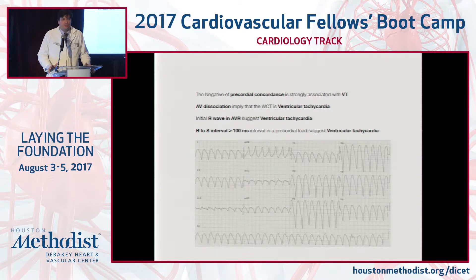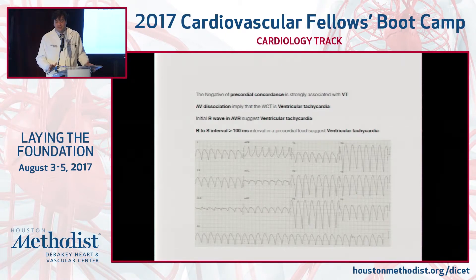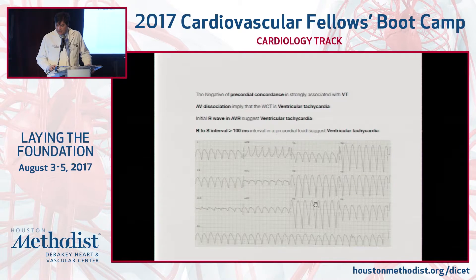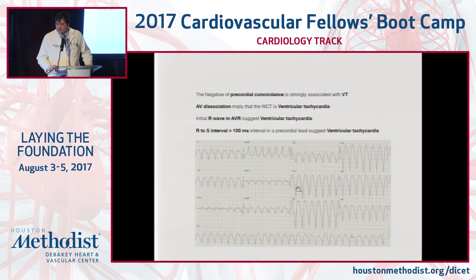We have to rely on other measurements. Negative precordial concordance is strongly suggestive of ventricular tachycardia rather than positive concordance, because the energy goes from the apex to the base, giving that negative concordance. Positive concordance means energy goes from base to apex — that could be SVT or VT. We also talk about AV dissociation — if you see P waves marching out independently. Initial R-wave positive in AVR: as you can see here, a very tall positive AVR means energy is coming from apex to base, so no SVT can really do that. RS interval greater than 100 milliseconds is also suggestive.